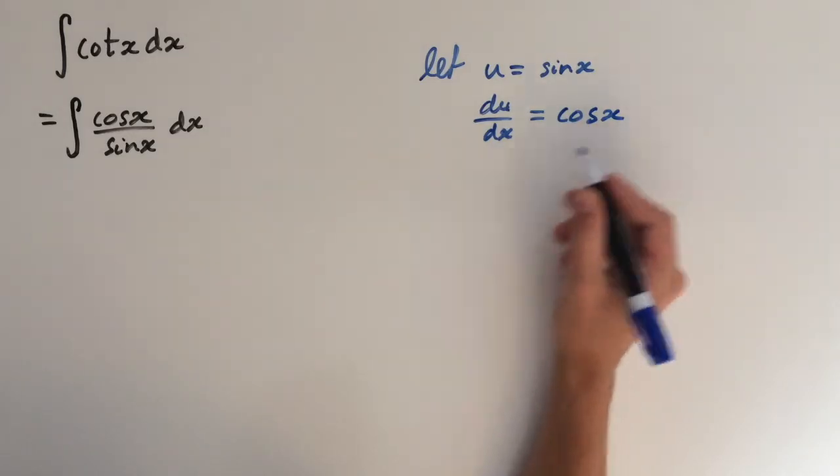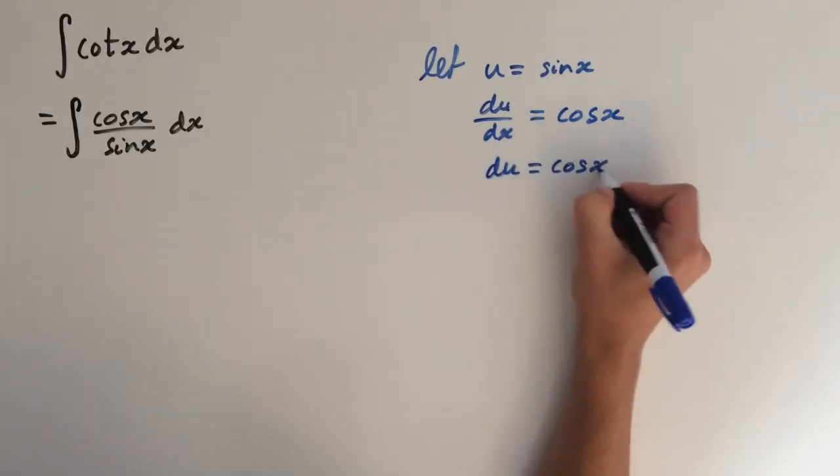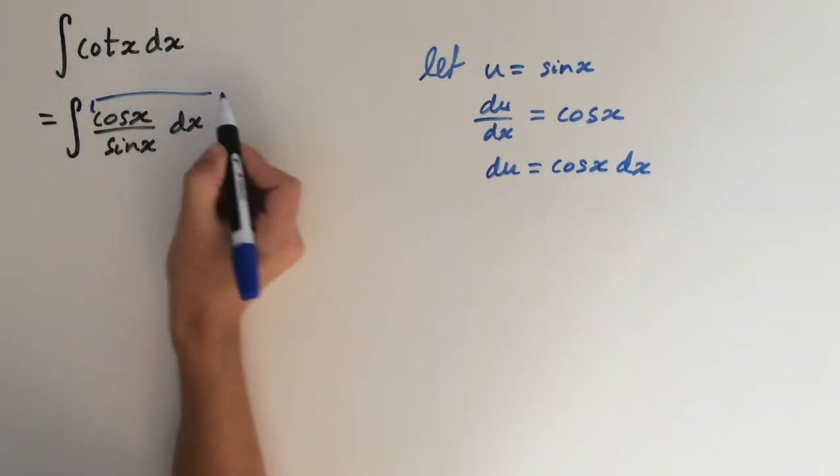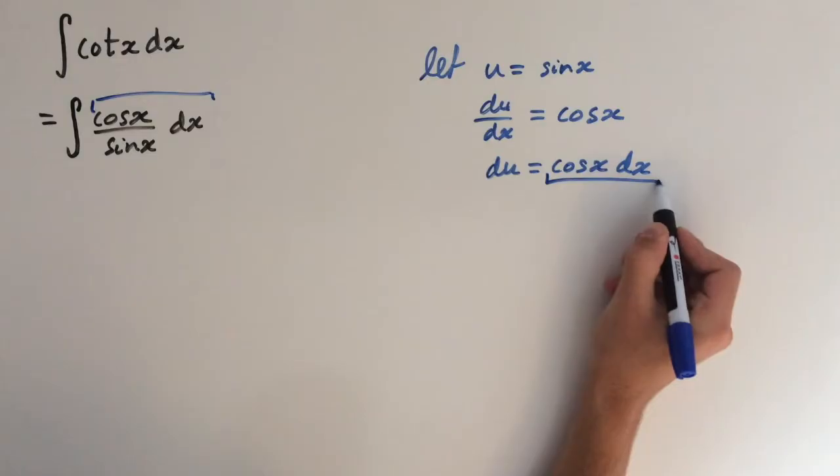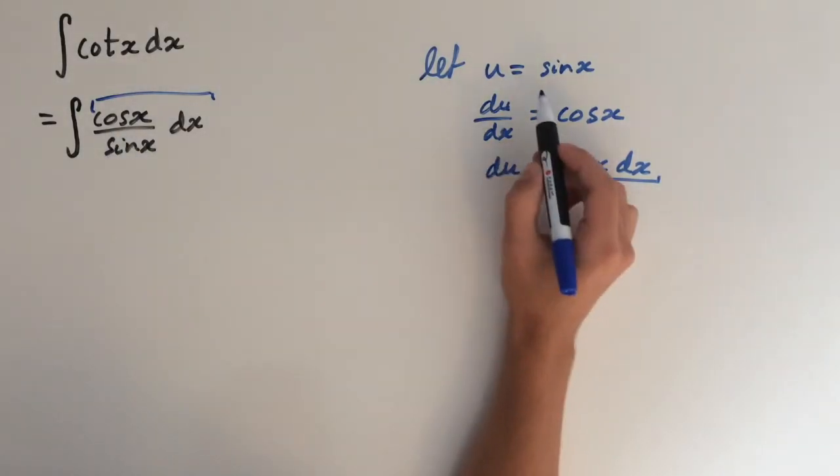So let's multiply by dx on both sides. du equals cos x dx. And I can see here, this part right here corresponds to this one. So we can just substitute here for du and sin equals u.